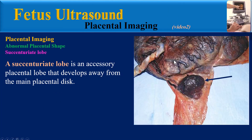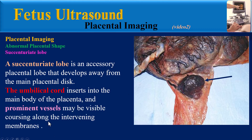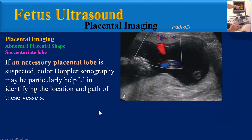A succenturiate lobe is an accessory placental lobe that develops away from the main placental disc. The umbilical cord inserts into the main body of the placenta, and prominent vessels may be visible coursing along the intervening membranes. If an accessory placental lobe is suspected, color Doppler sonography may be particularly helpful in identifying the location and path of these vessels. In this 20-week gestation, the umbilical cord inserts at the main body of the placenta, which is implanted anteriorly.